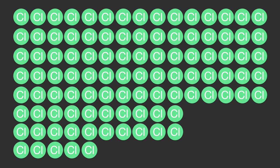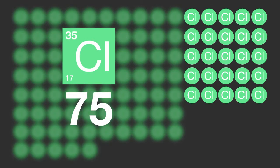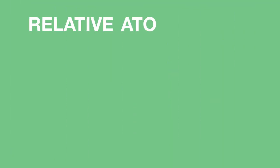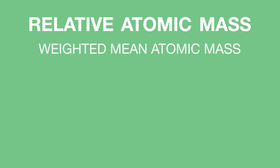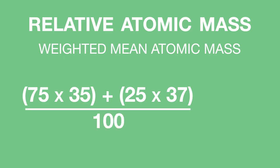Based on the abundance in the example already given, 75 of these would be chlorine-35 and 25 would be chlorine-37. Knowing this, we can work out the relative atomic mass — in other words, the weighted mean atomic mass — using a formula as follows: (75 × 35 + 25 × 37) ÷ 100 = 35.5.